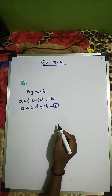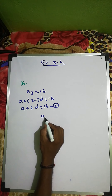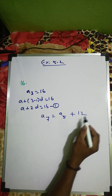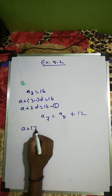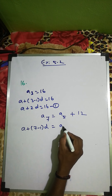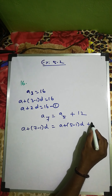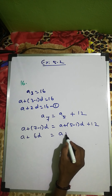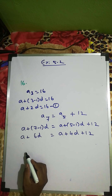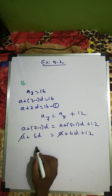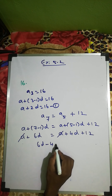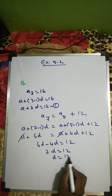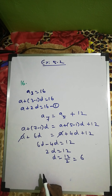For the second condition, the seventh term exceeds the fifth term by 12: a7 - a5 = 12, so (a + 6d) - (a + 4d) = 12. The a terms cancel, giving 2d = 12, therefore d = 6.